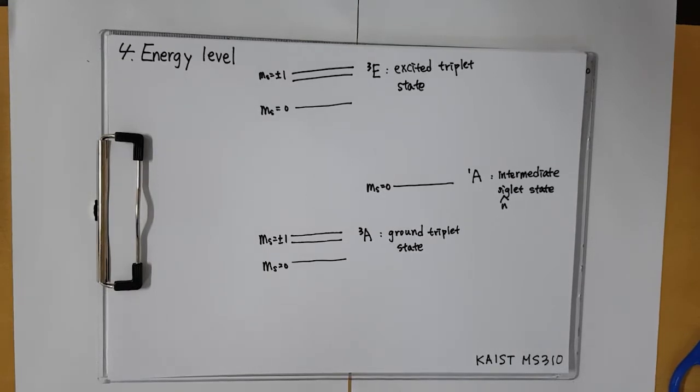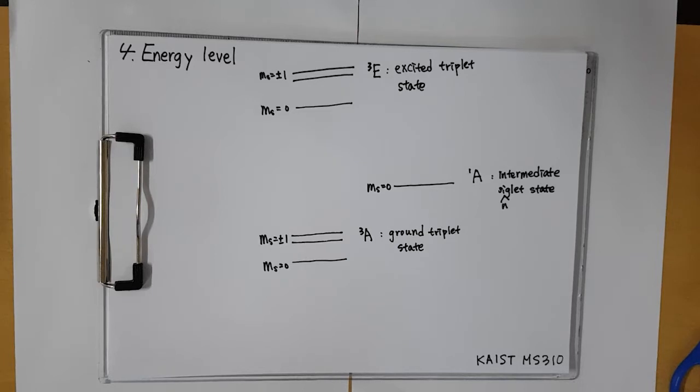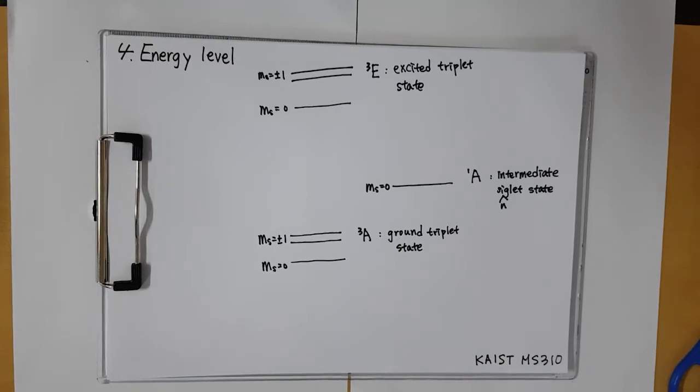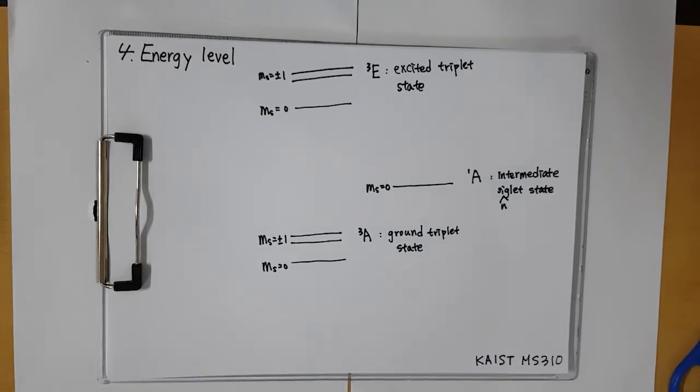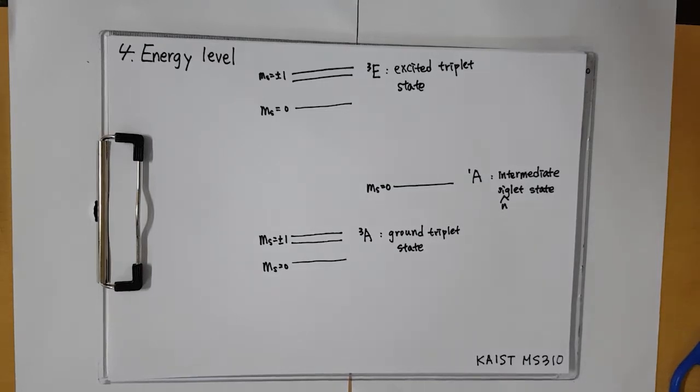Because of this, there are some features. First, as we can see the picture, singlet energy state is higher than triplet energy state. This is because of the exchange energy. Same direction of electron spin has lower energy than opposite direction of the electron spin.